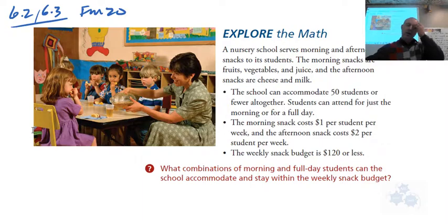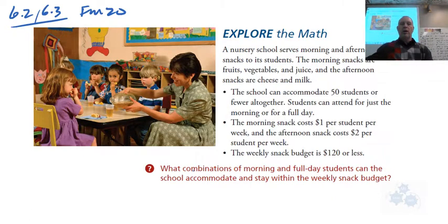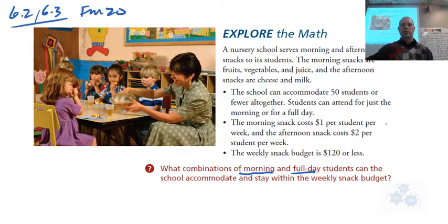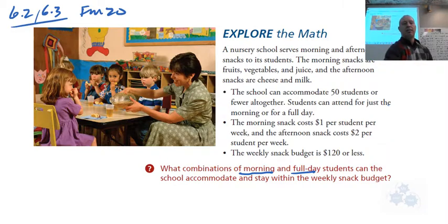You could just go X and Y, but you have to think: what does X actually mean? What does Y actually mean? The tip is in the question. When you're looking at the question, it says: what combinations of morning and full day students can the school accommodate and stay within the weekly snack budget? So that is the number of morning snacks and the number of afternoon snacks as well. Go ahead and take a couple minutes with a partner and see if you can come up with a system of linear inequalities for this question.